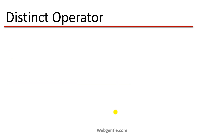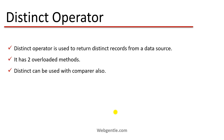First, let's understand what is the distinct operator. Distinct operator is used to return distinct records from a data source. In simple terms, distinct operator is used to remove the duplicacy from the data source. Distinct has two overloaded methods and distinct can be used with a comparer also. We have covered IEqualityComparer in part 19, and the same interface we can use with the distinct operator. We can also use IEquatable, which is another interface that can be used for comparison. We will create a demo with IEquatable in this part.